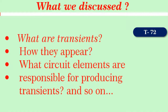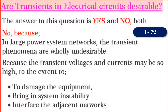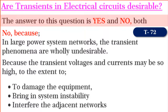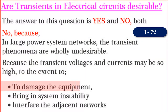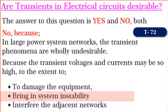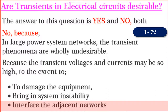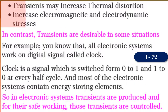From the earlier discussion, we have clearly understood transients — how they appear, and which circuit elements produce them. If I ask you, are transients desirable? My answer is both yes and no. No, because in large power systems, the transient voltages and currents are so large in magnitude as to damage the equipment itself and bring instability to system operation. Further, large amplitudes may cause interference to adjacent networks. Also, they may increase thermal distortion and electromagnetic stresses on the system.